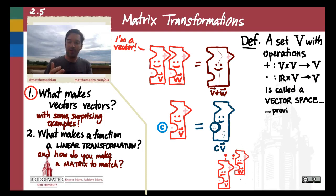And that set combined with those operations is called a vector space, as long as those operations satisfy some reasonable conditions that make them qualify as being addition and as being scalar multiplication.